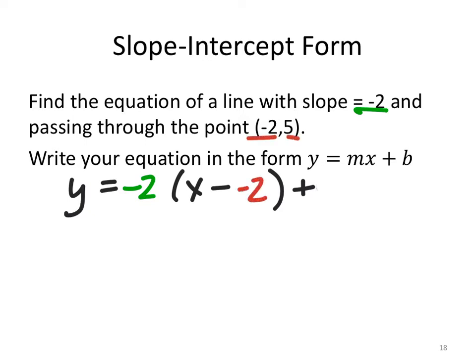That's minus a negative there, so I'm going to change that to a plus. Let's go and distribute the negative 2 now. So negative 2 times x is negative 2x, and negative 2 groups of 2 is negative 4.